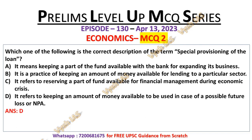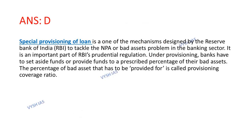The correct answer is option D. Special provisioning of loans refers to keeping an amount of money available to be used in case of a possible future loss or NPA. Special provisioning of loan is a mechanism designed by the Reserve Bank of India to tackle the NPA or bad asset problem in the banking sector. It is an important part of RBI's prudential regulation. Under provisioning, banks have to set aside funds to a prescribed percentage of their bad assets. The percentage of bad assets that has to be provided for is called the provisioning coverage ratio.